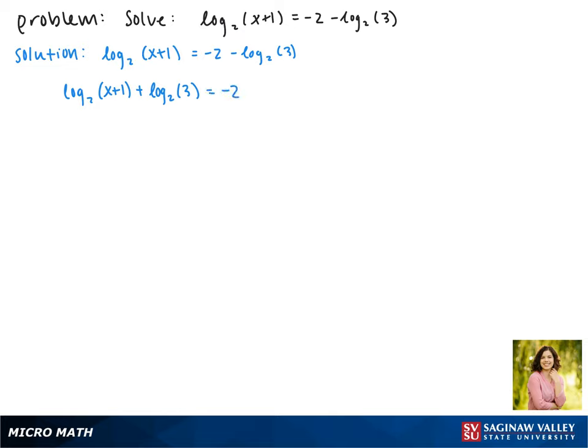Now our logarithm rules say that when two logs with the same base are being added, what's inside can be multiplied. This gives us log base 2 of 3 times the quantity x plus 1 equals negative 2.